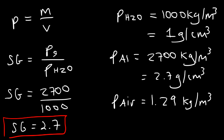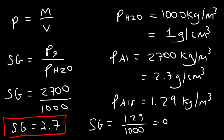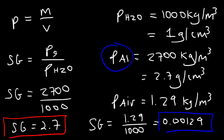In the case of air, it's a very small number. It's the density of air, which is 1.29, divided by the density of water, which is 1,000, giving 0.00129. The specific gravity is unitless — it doesn't have a unit, because the kilograms per cubic meter units cancel when you divide.